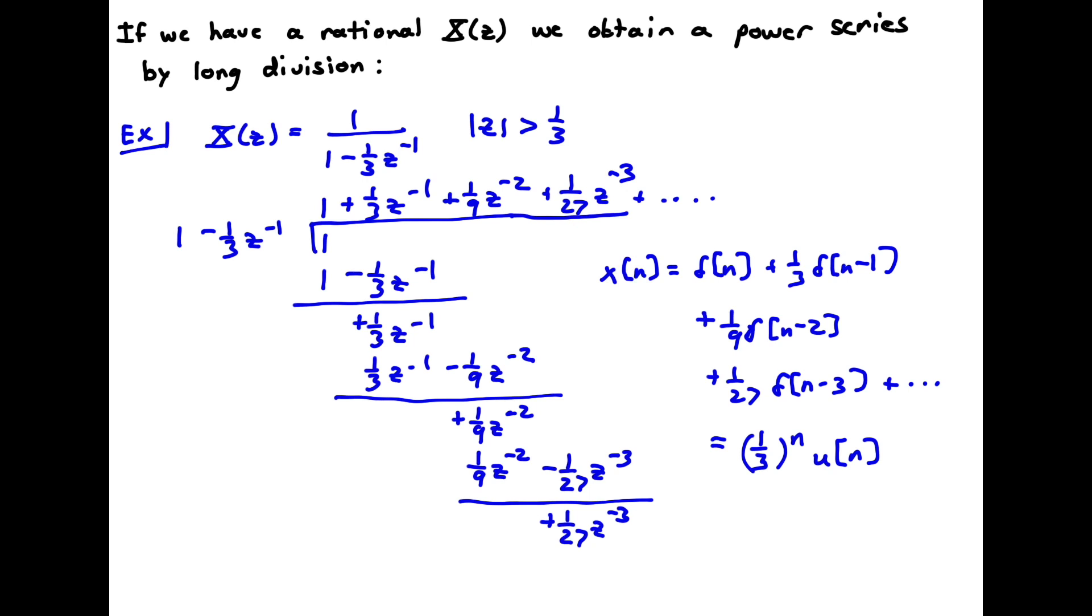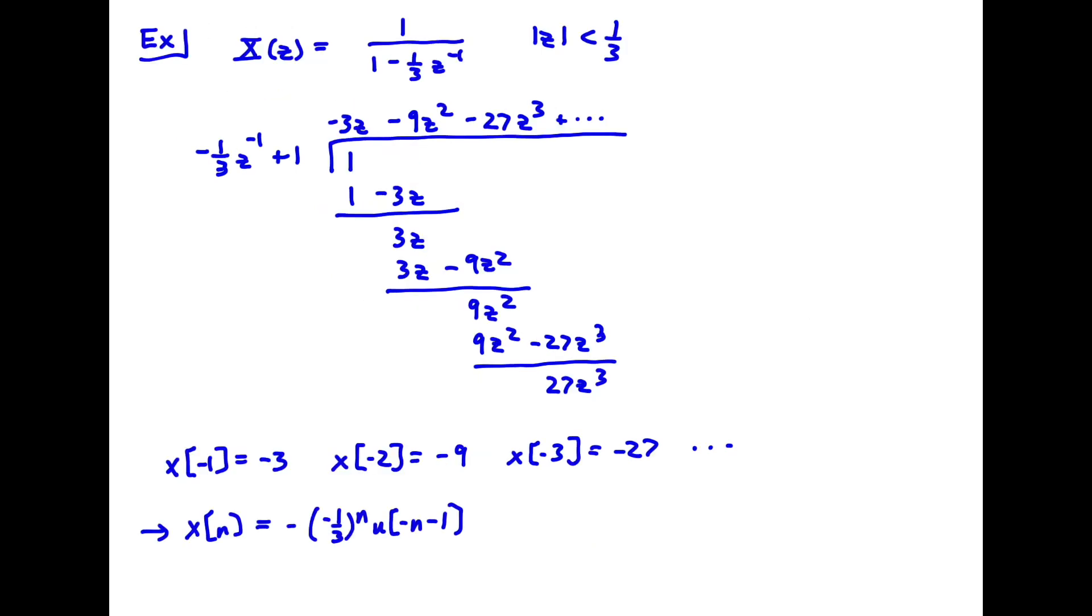But now, you might have remembered here that we had the same algebraic expression with a different ROC. How would we use power series and long division to get that inverse transform? So this is that example. We start with the same algebraic expression we started with before, but now we have a different ROC. So we've got to set up this long division to get that power series differently. And what did I do here?